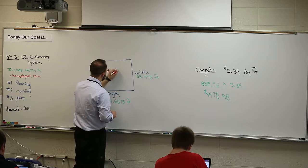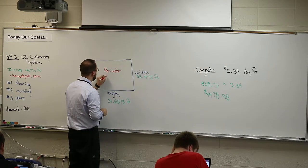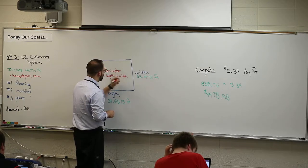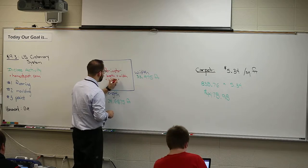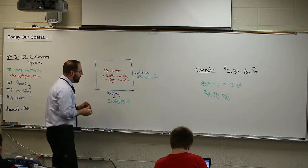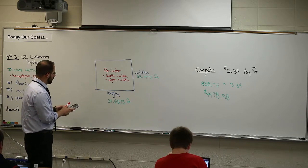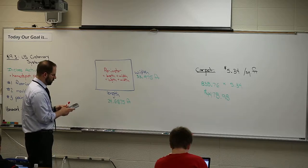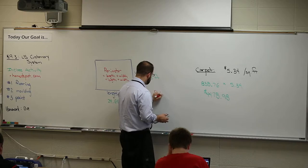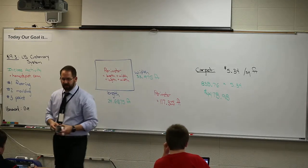Crown molding goes along the top edge of the room — the molding runs along the whole wall. So what you do is add up all the walls: you add the length and width together. There are four walls, so you add them up twice. When I add 24.6875 plus 33.975 and take it times two, my perimeter comes out to 117.325 feet. That's the perimeter, not area.